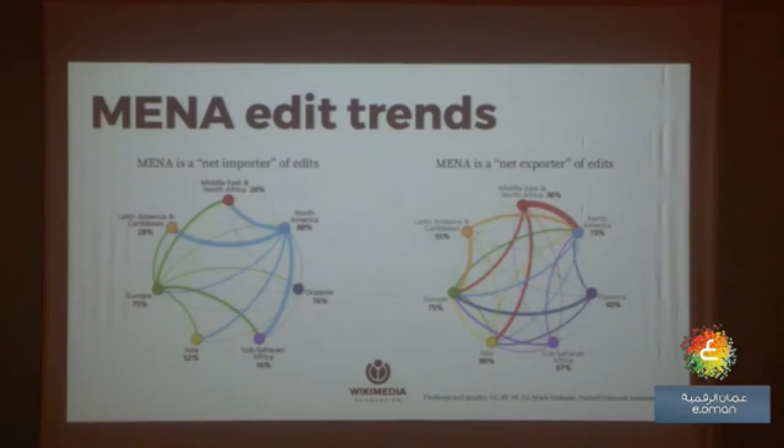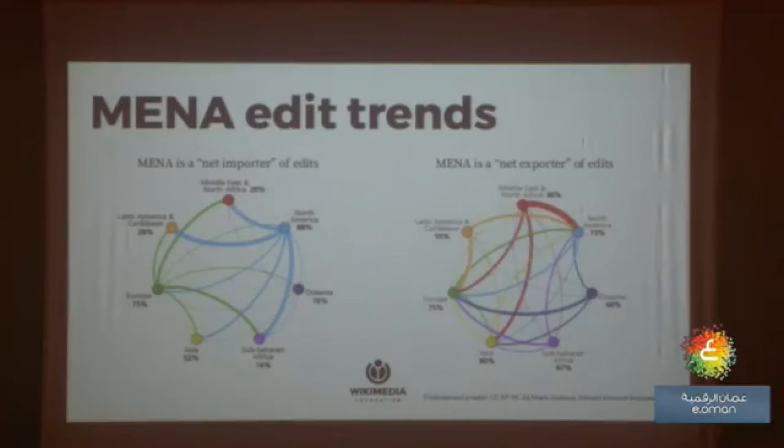They found that the MENA region is a net importer of edits — people writing about the region are not in the region. People in North America, Australia, and Asia are the ones writing about MENA. And when you look at people editing within MENA — living in Oman, the Gulf, or the Levant — most of their edits are actually about North America. It's almost like a Wikipedia brain drain: people in the region are writing about other topics, while people outside the region are writing about it. So if you think about representing Omani cultural heritage or Arab cultural identity and history, it may be diaspora or people not in the region who are representing that knowledge to the world.